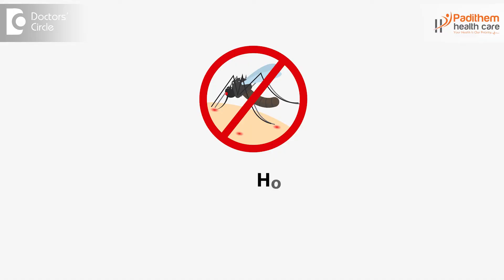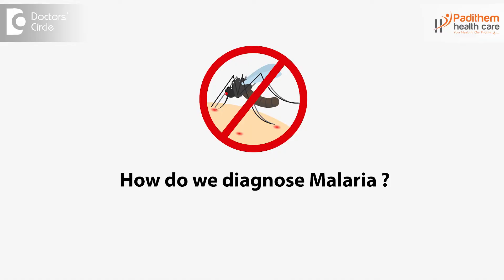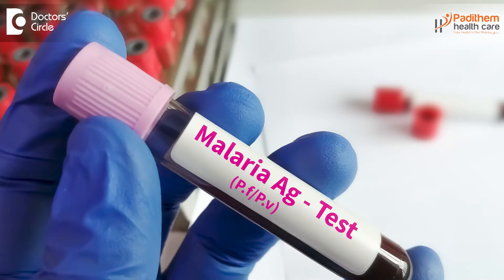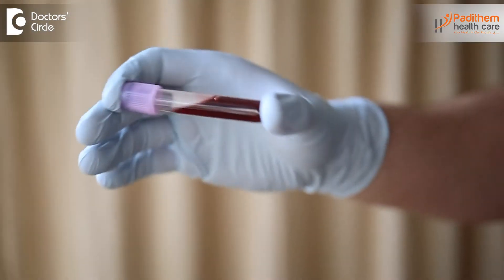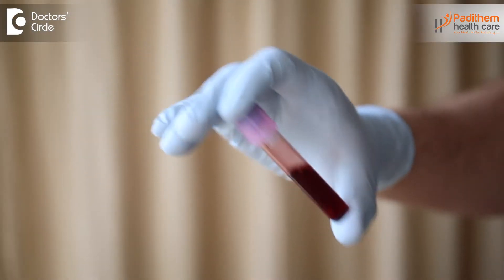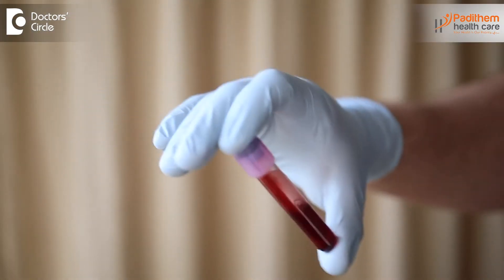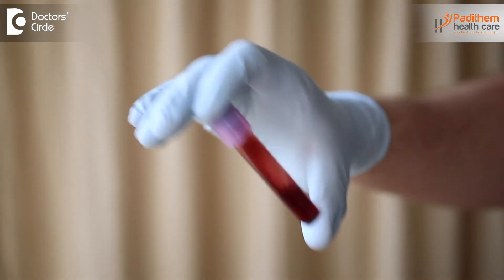So how do we diagnose malaria? Malaria can be easily diagnosed by blood examination — when the person walks into the doctor's chamber, the doctor will collect a blood sample for testing.